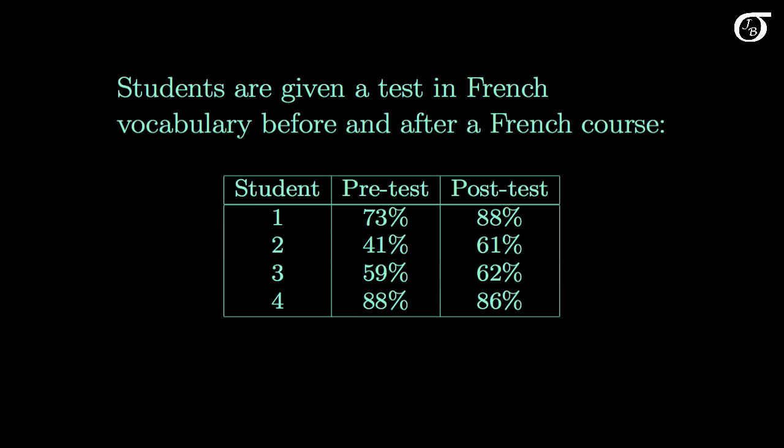Here's a slightly different but related example. Students given a test before and after a French course. Here we have the pre-test score before the course and the post-test score after the course. And here again we have two measurements on the same individual. And our goal, in a sense, is to see how much this course helped.